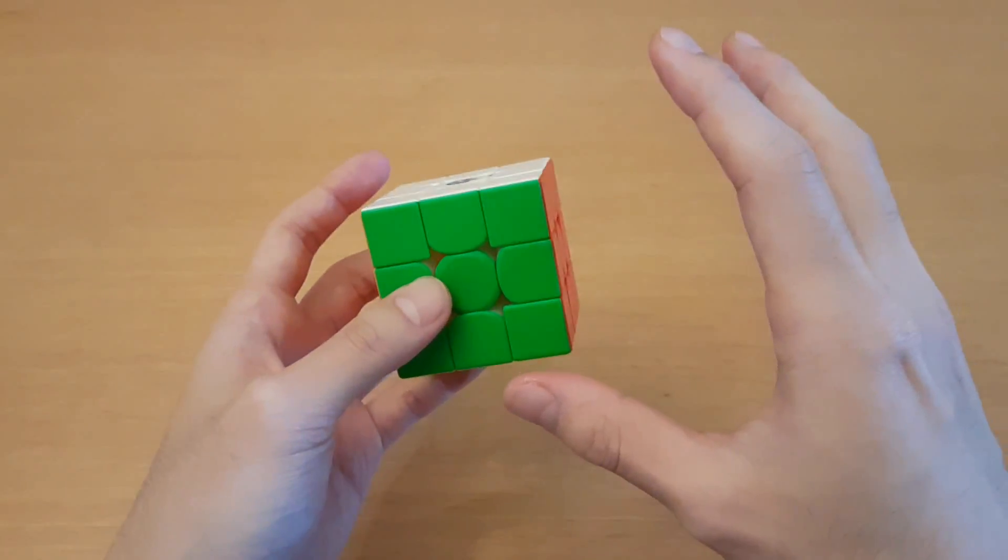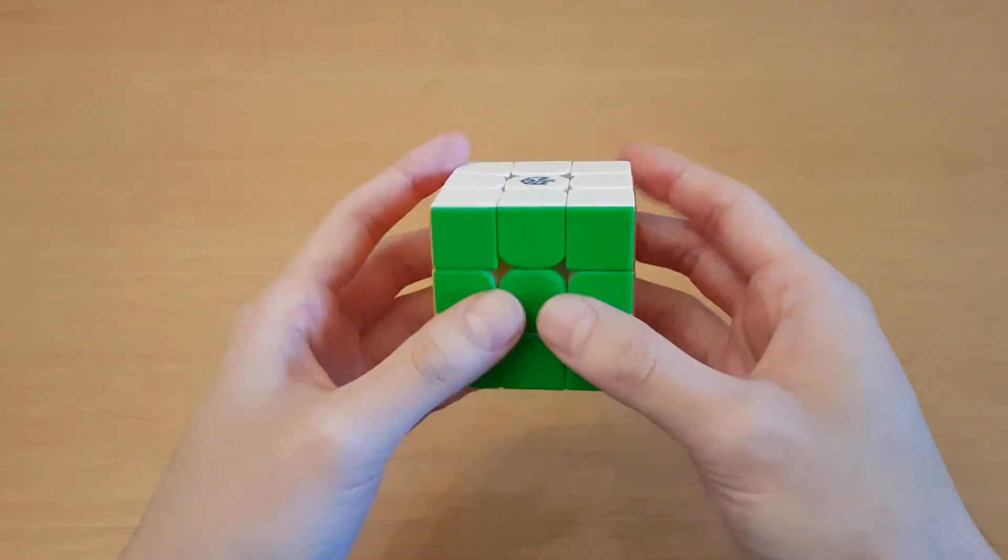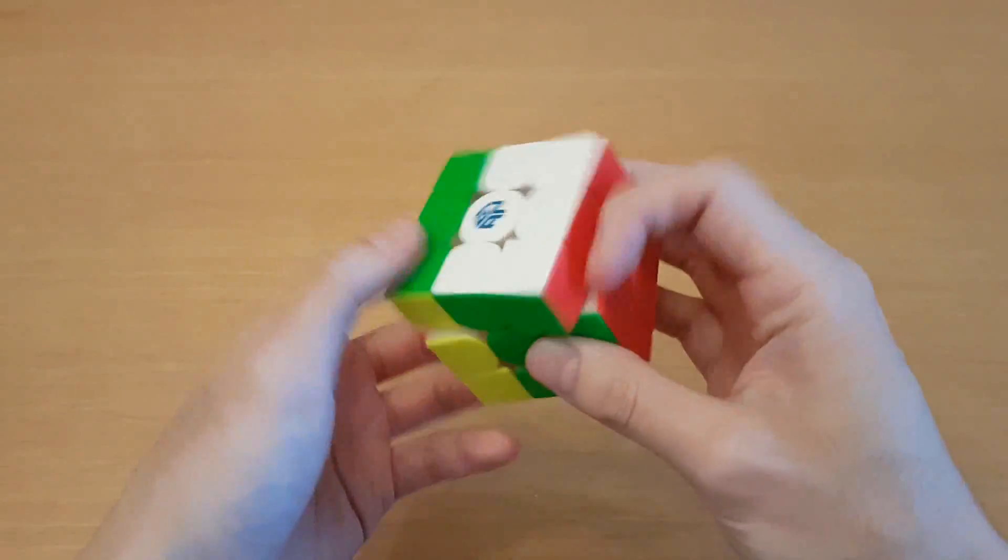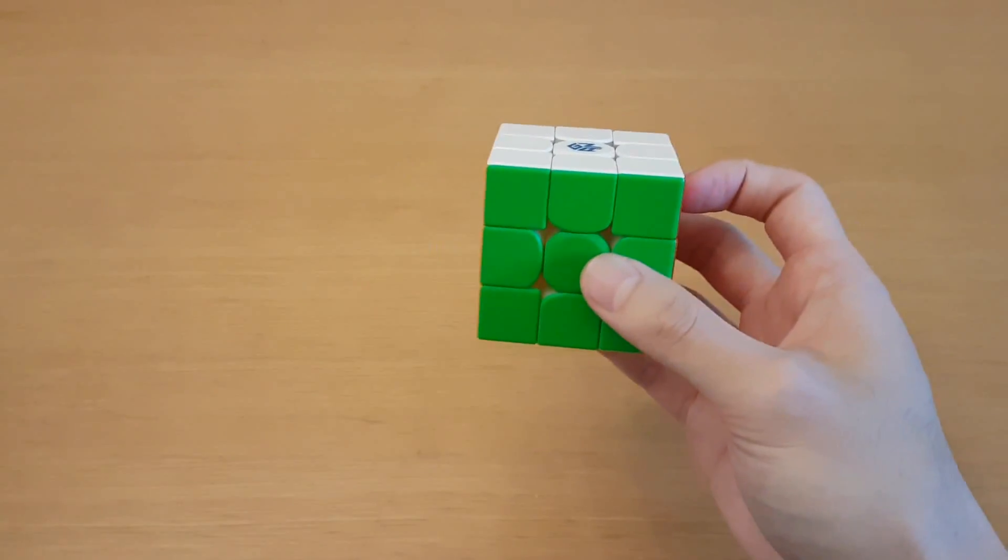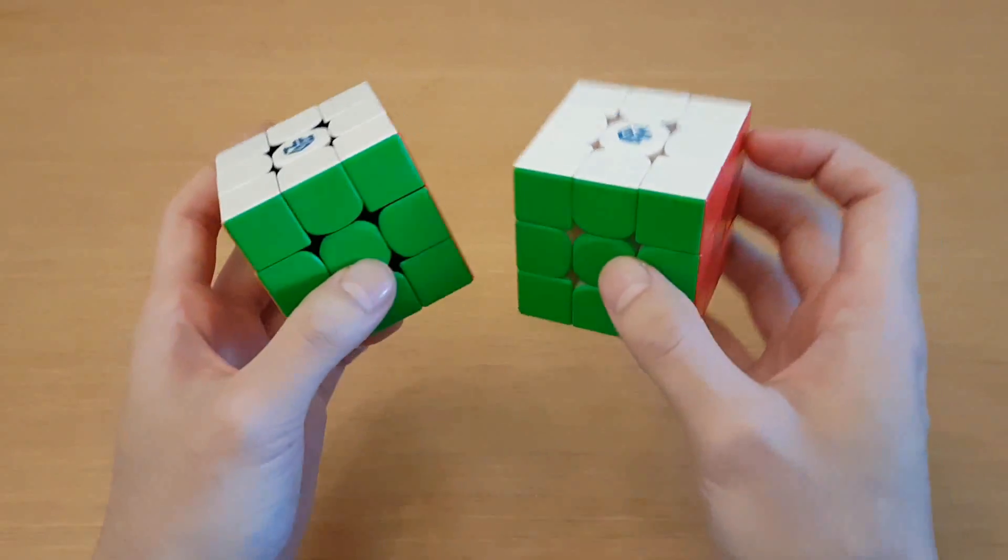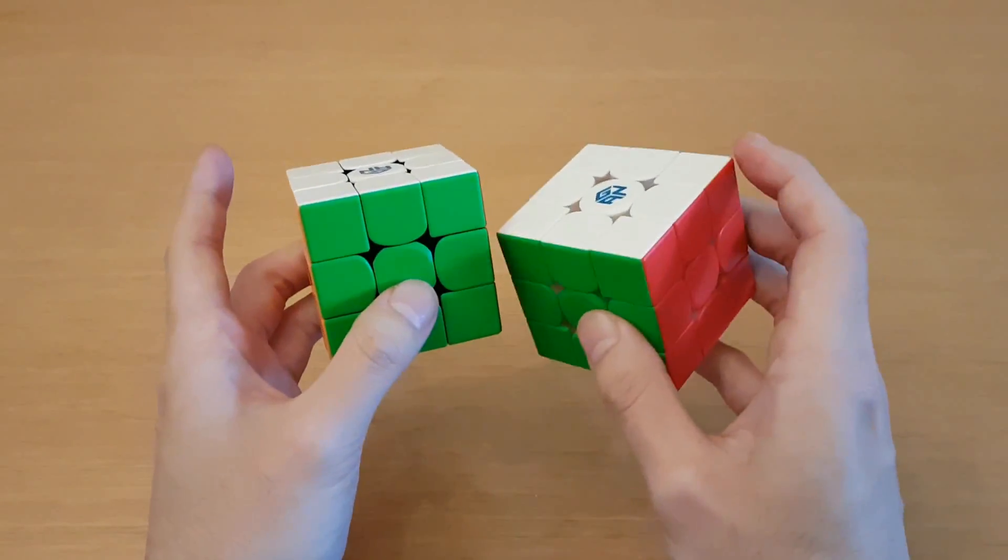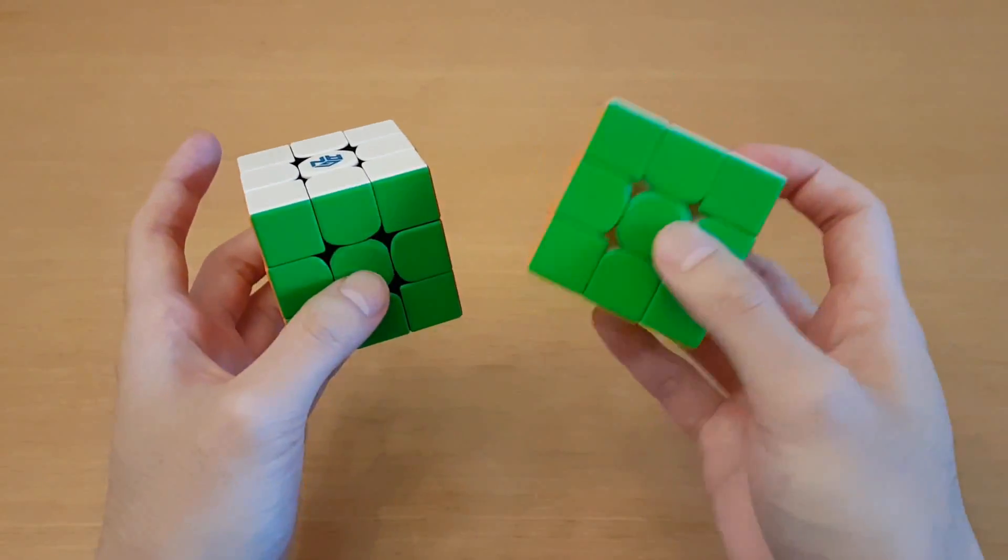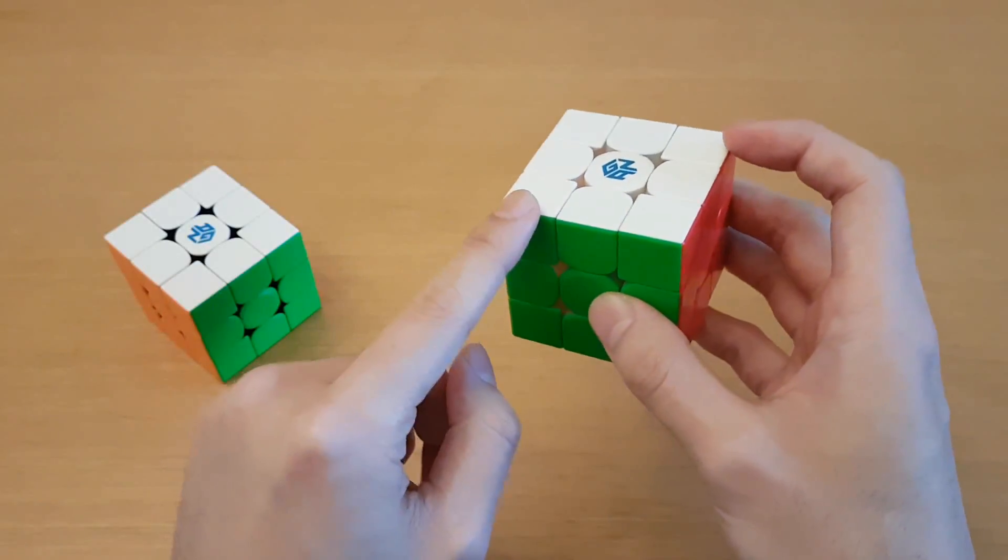So far, it feels very similar to the GAN XS, and it feels a little bit lighter. This cube in particular may be a little bit faster and easier to turn than this GAN XS, which is on the exact same settings, and I'll explain that later. But sometimes the cube being lighter can make it feel easier to turn, so I'm not sure if this cube is actually faster.